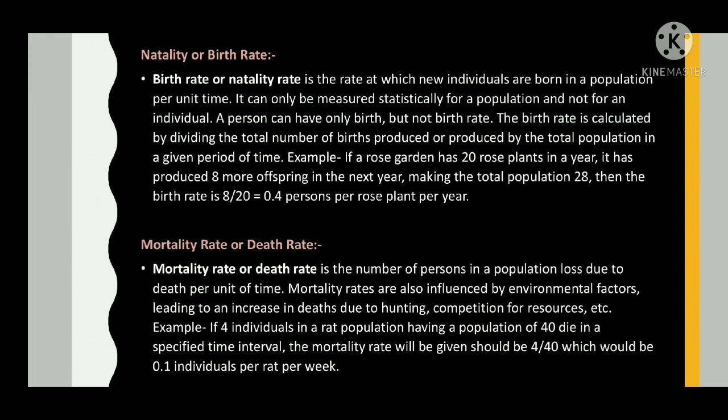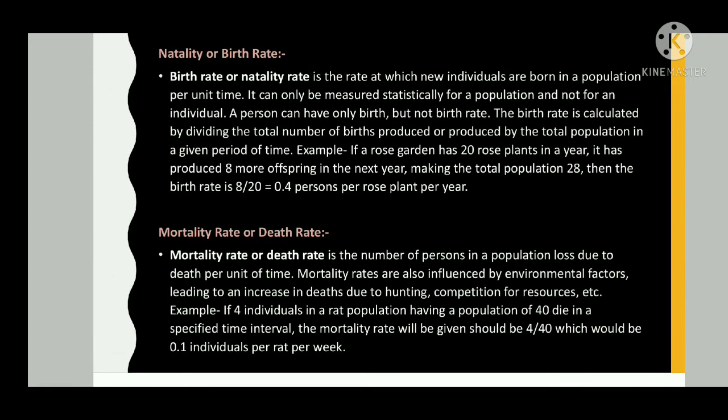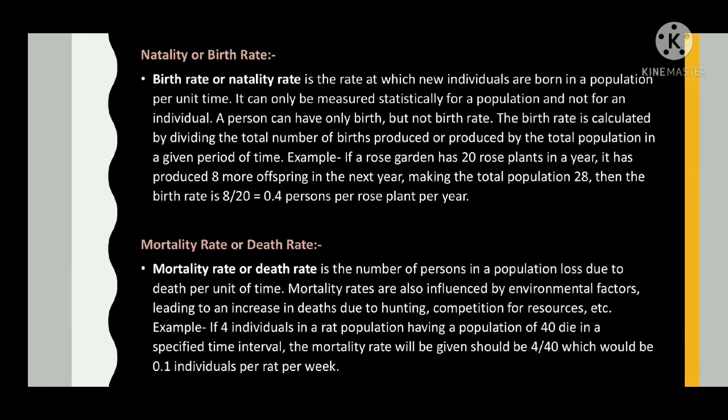A person can have only a birth but not a birth rate. The birth rate is calculated by dividing the total number of births produced by the total population in a given period of time. For example, if a rose garden has 20 rose plants in a year and has produced 8 more offspring in the next year, making the total population 28, then the birth rate is equal to 8 divided by 20, which equals 0.4 offspring per rose plant per year.